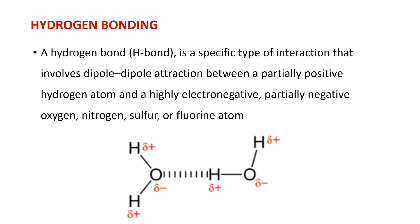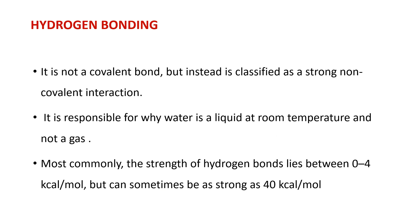Another type of electrostatic interaction is hydrogen bonding. A hydrogen bond is a specific type of interaction that involves dipole-dipole attraction between a partially positive hydrogen atom and a highly electronegative, partially negative oxygen, nitrogen, sulfur, or fluorine atom. It is not a covalent bond but instead is classified as a strong non-covalent interaction. Most commonly, the strength of hydrogen bond lies between 0 to 4 kilocalorie per mole, but can sometimes be as strong as 40 kilocalorie per mole.